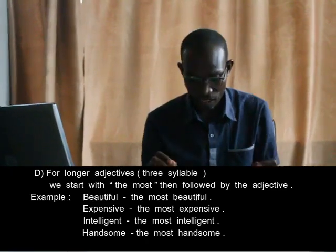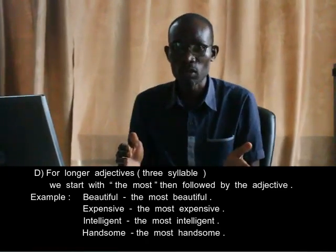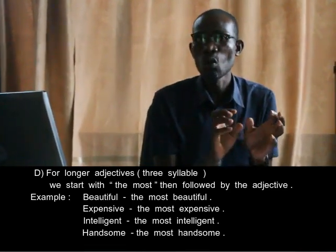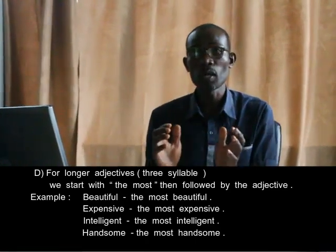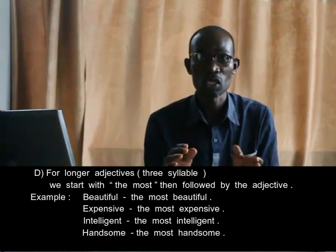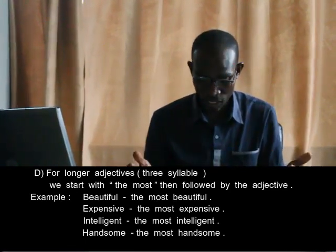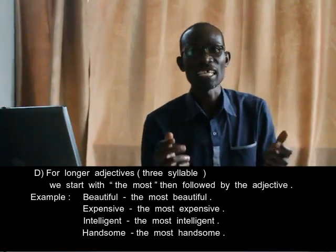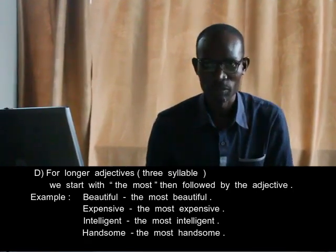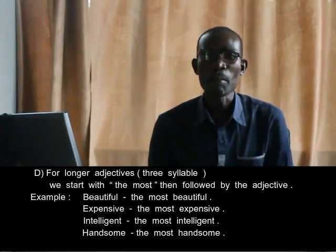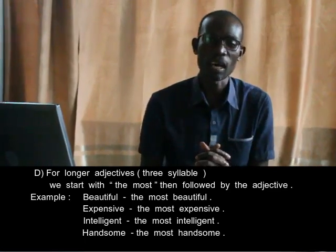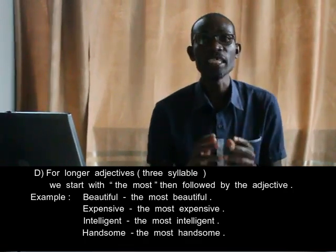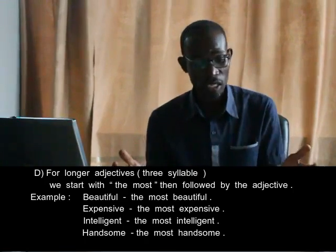Last rule: for longer adjectives — that is, adjectives with more than three syllables — we add the word 'most.' Remember, in comparative degree we were adding 'more' to long adjectives, for example 'more intelligent.' But now in superlative degree we add 'most.' For example: 'beautiful' becomes 'the most beautiful' — 'My daughter is the most beautiful.' 'Expensive' becomes 'the most expensive' — 'My father bought the most expensive car.' 'Intelligent' becomes 'He is the most intelligent boy in our class.'